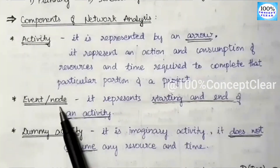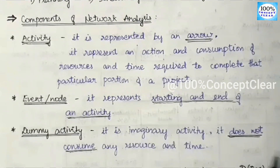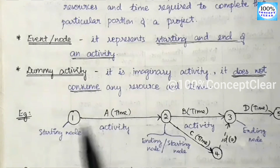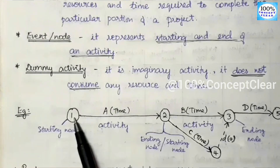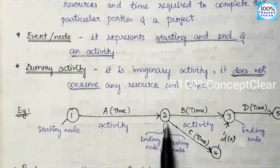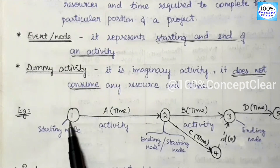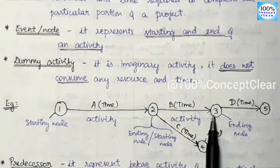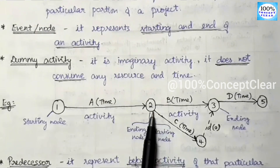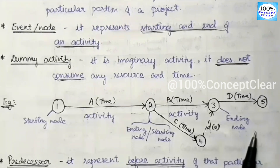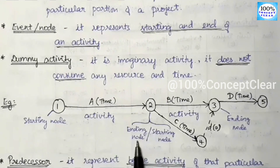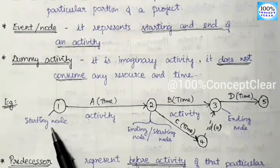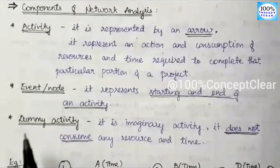The next component is event or node. It represents the starting and end of an activity. Every activity has two nodes: a starting node and an ending node. For activity A, the starting node is 1 and ending node is 2. For activity B, starting node is 2 and ending node is 3. For activity C, starting node is 2 and ending node is 4. The starting node is also known as the tail, and the ending node is also known as the head.